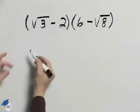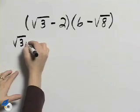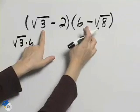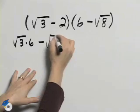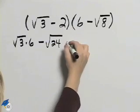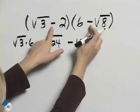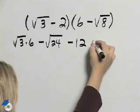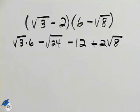To simplify this we'll use FOIL, so we'll take square root of 3 times 6 minus square root of 3 times the square root of 8, which is the square root of 24, minus 2 times 6, which is 12. And then we have minus minus, so plus 2 times the square root of 8.